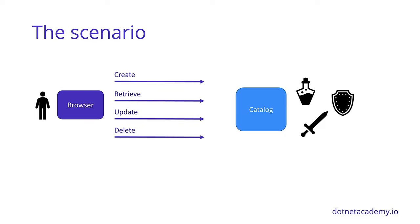As it is today, we do have the catalog available, but we lack a way to expose this catalog to the internet so that people can go ahead and manage it from the browser. That's where we're going to introduce our REST API for this catalog, and during this tutorial we're going to see how to build this REST API from scratch using .NET 5.